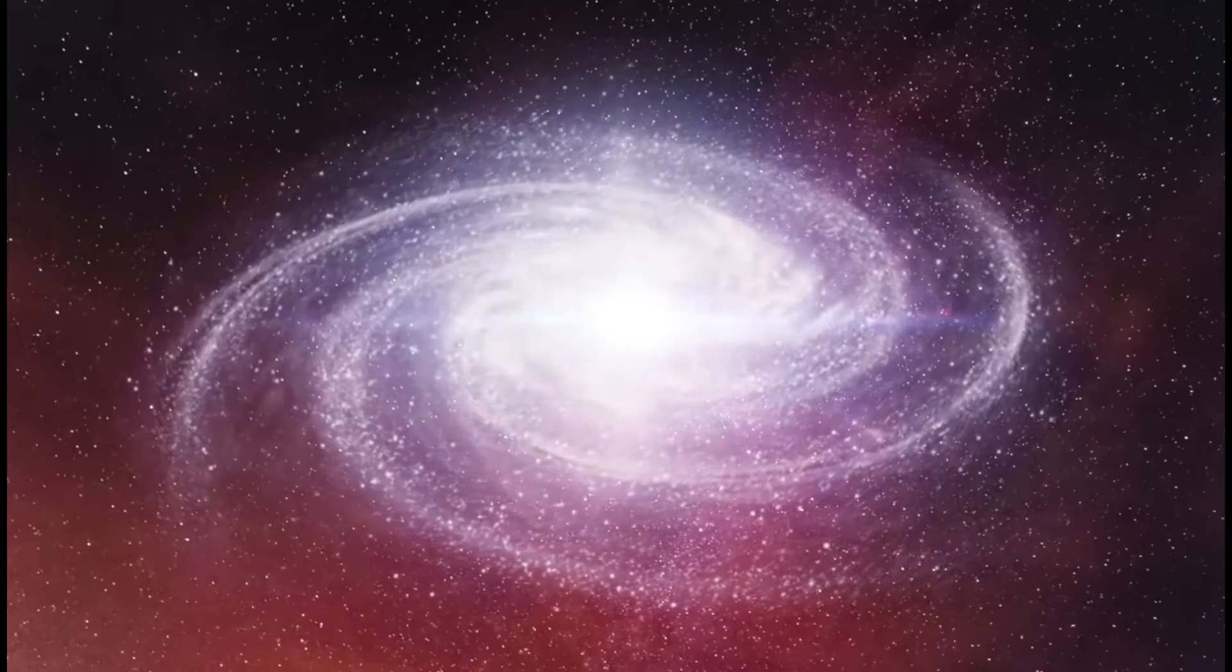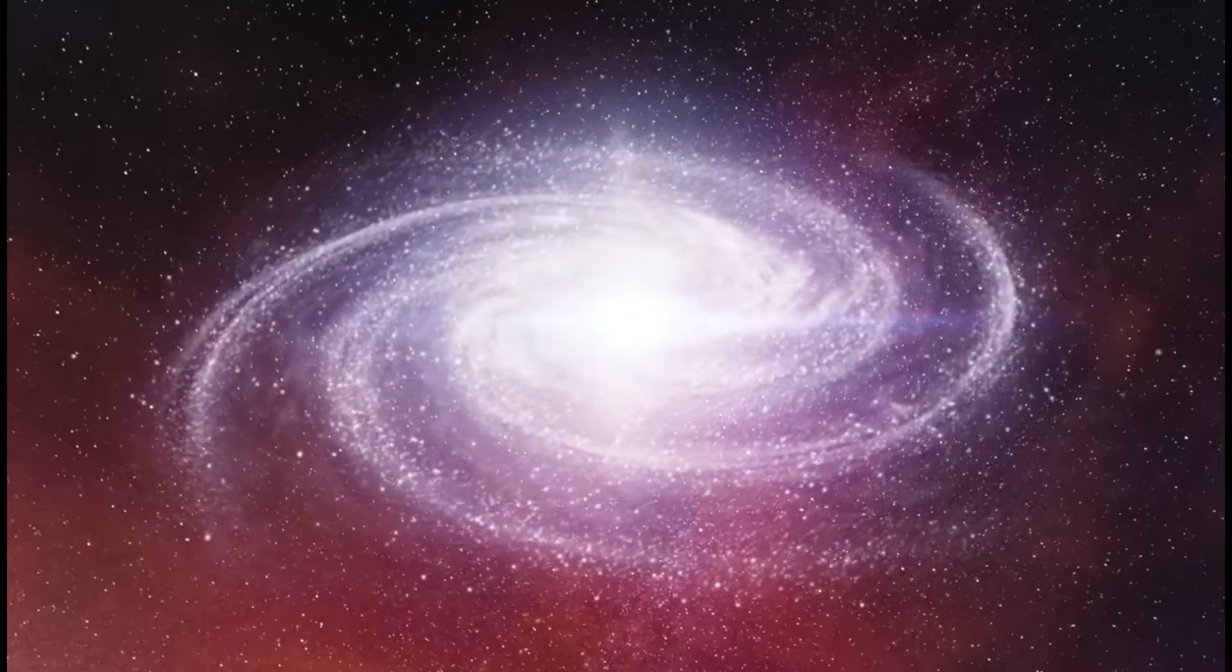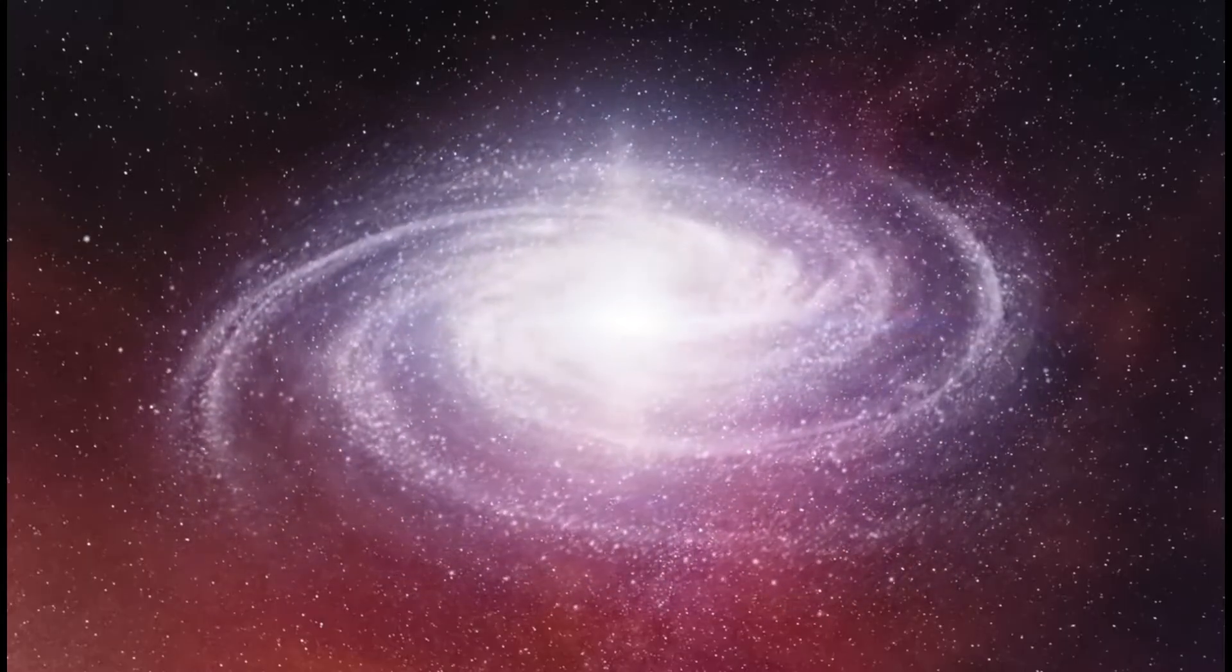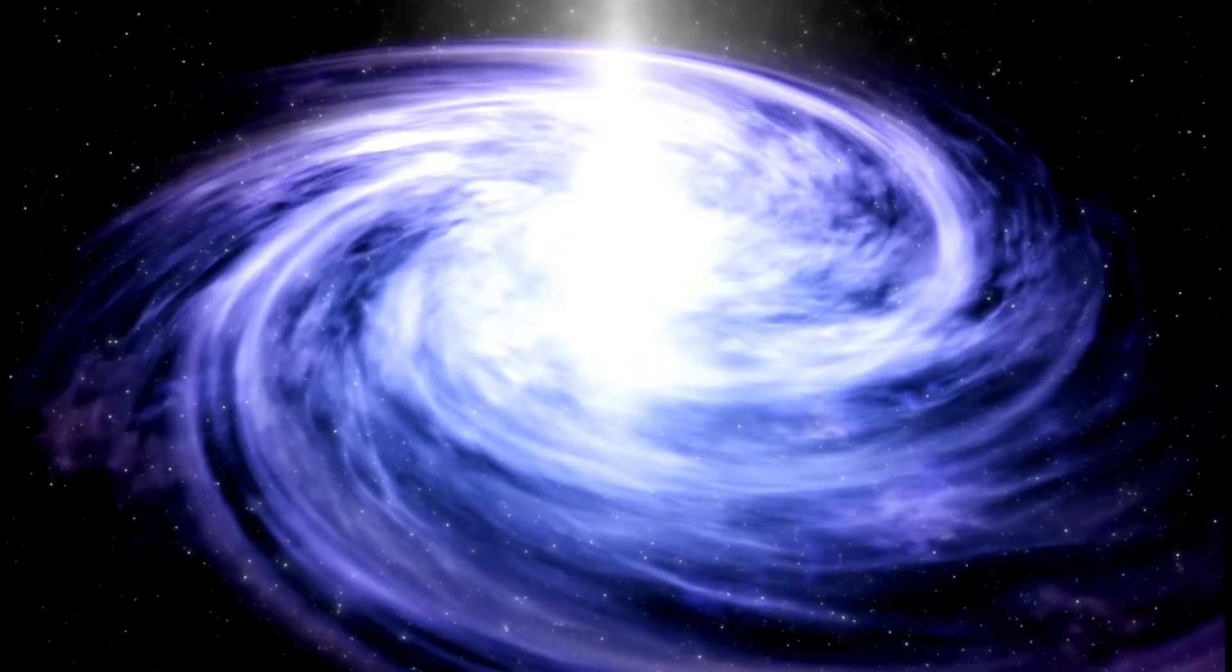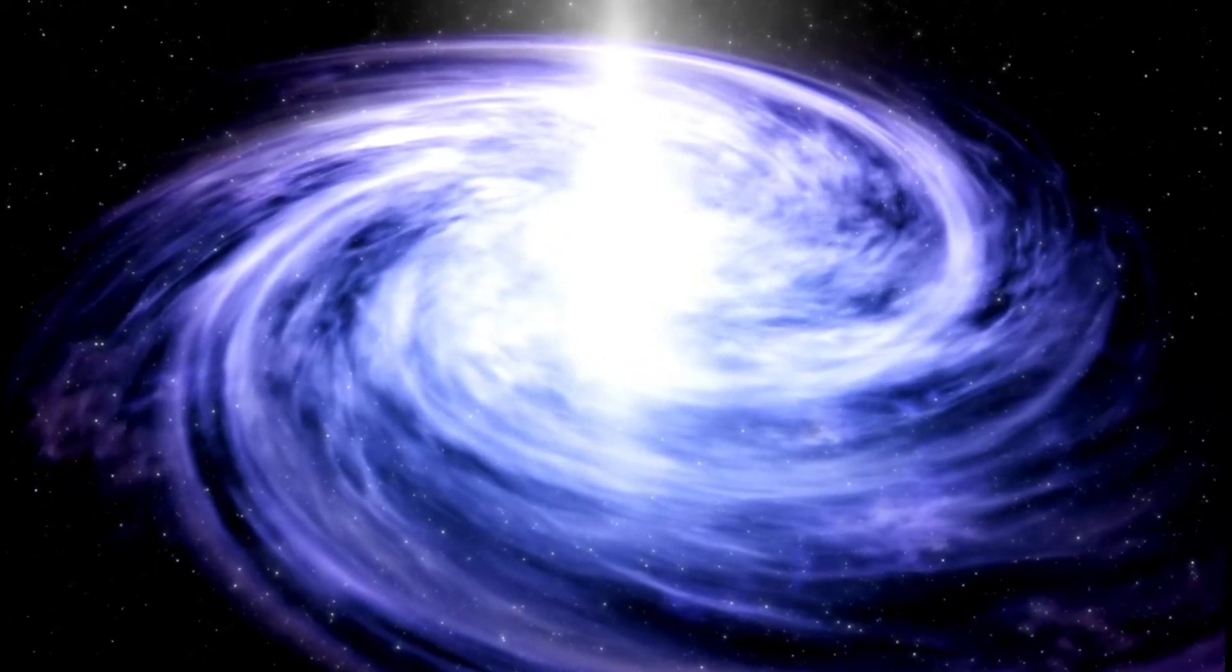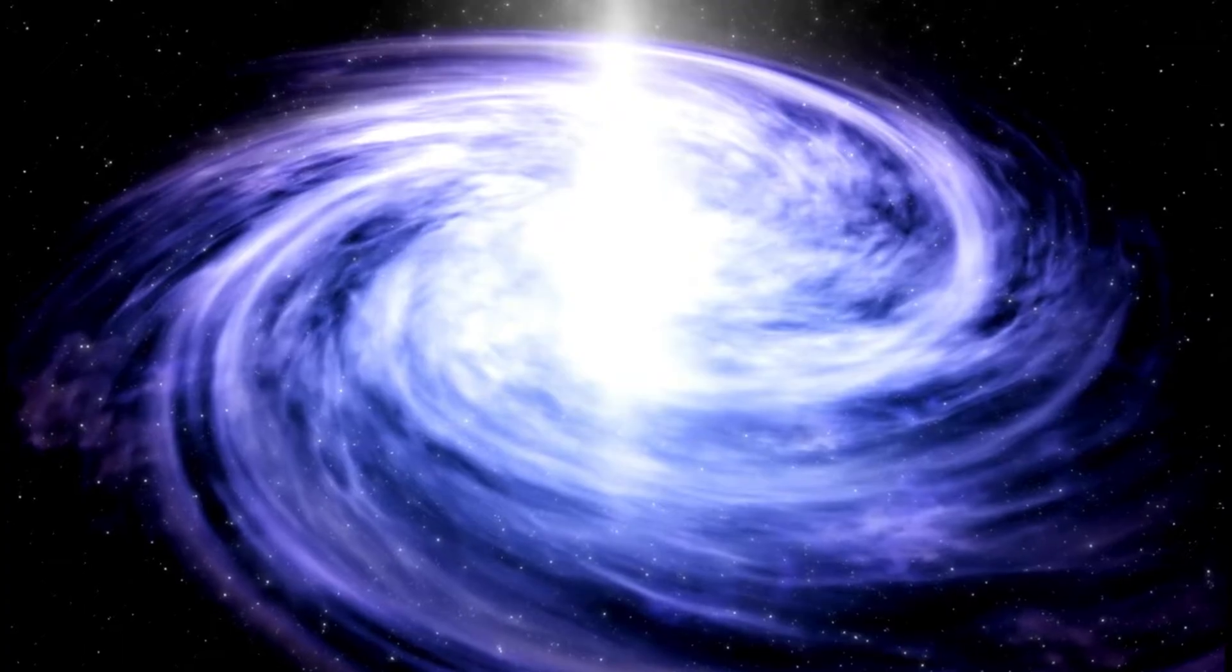The concentric rings of gas are the remnants of the star's outer layers, which were ejected as it reached the end of its life cycle. This image provides valuable insight into the life cycle of stars, from their formation to their eventual demise. The Southern Ring Nebula is a reminder of the constant cycle of birth, death, and rebirth that occurs in the universe.